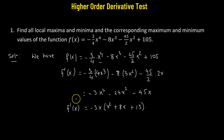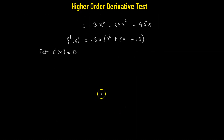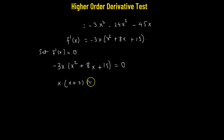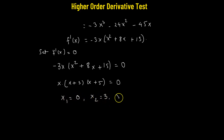To find local maxima or minima, we set f'(x) = 0. So negative 3x(x² + 8x + 15) = 0, which factors as negative 3x(x + 3)(x + 5) = 0. Since negative 3 cannot be zero, we get three critical values: x₁ = 0, x₂ = negative 3, and x₃ = negative 5.